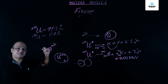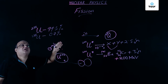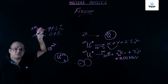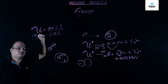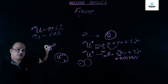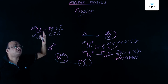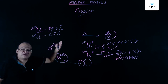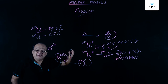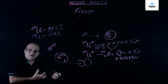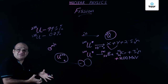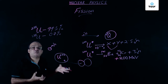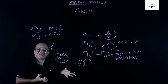Initially when this technology was developed it took a very long time to separate these two isotopes. The first atom bomb dropped at Hiroshima was based on U-235. For the second atom bomb they did not have sufficient enriched uranium, and that was based on plutonium-239.